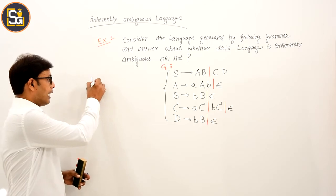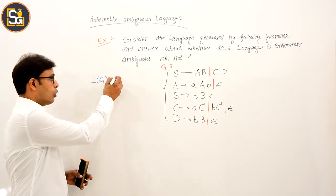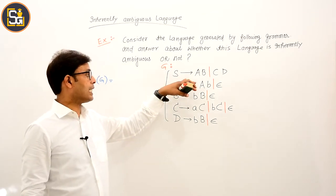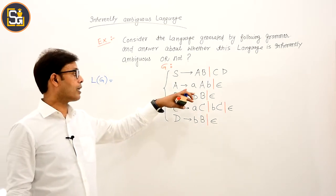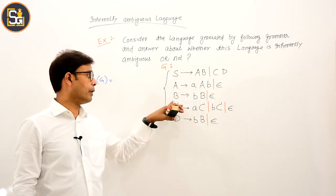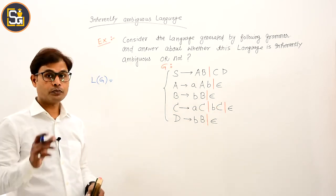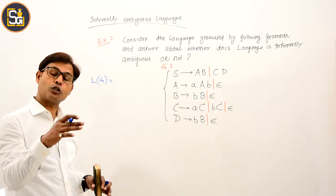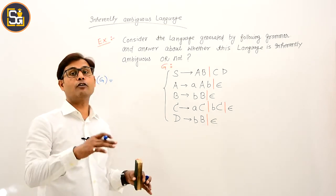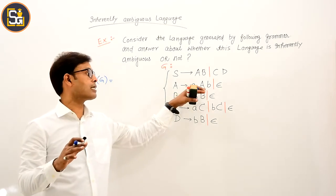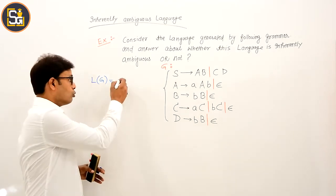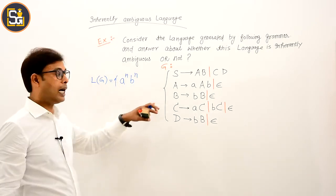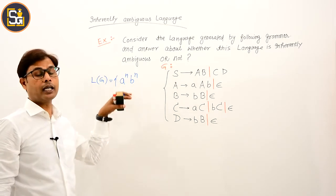So, L(G) — the language generated by this grammar — let me write it. From here, S derives AB. Now, what does A derive? A derives a's (a^n). And what does B derive? B derives b's or epsilon. So from here, the total number of a's followed by total number of b's — strings of the form a^n b^k are being generated from this path.